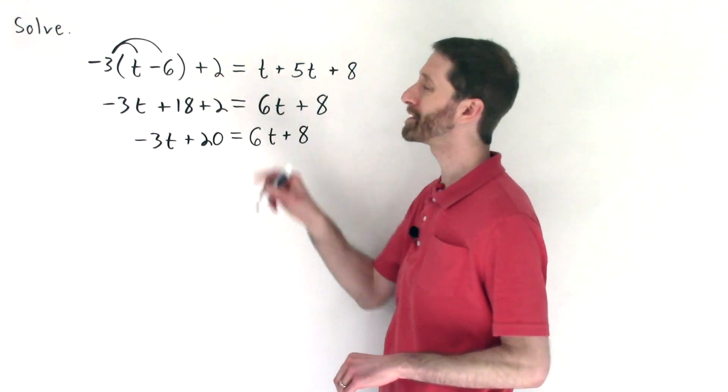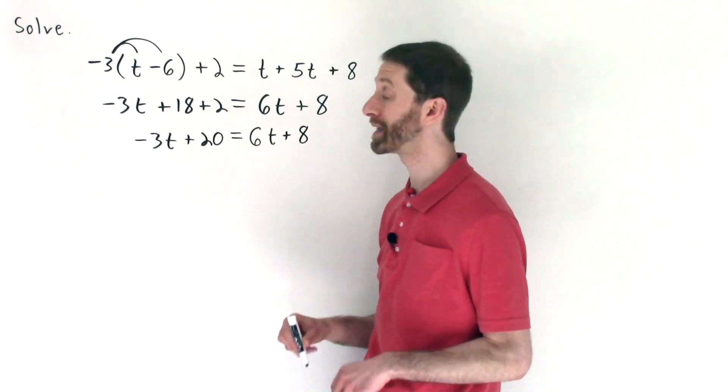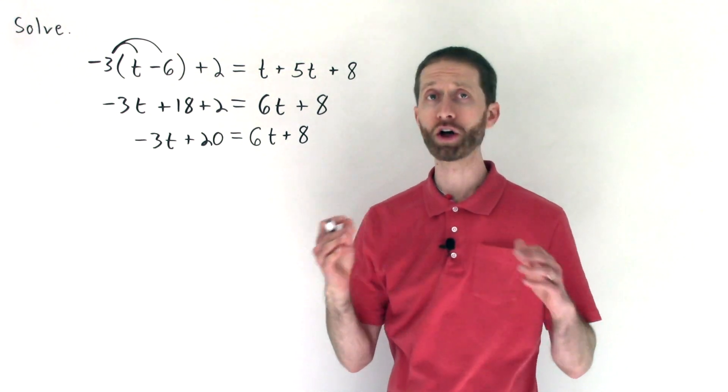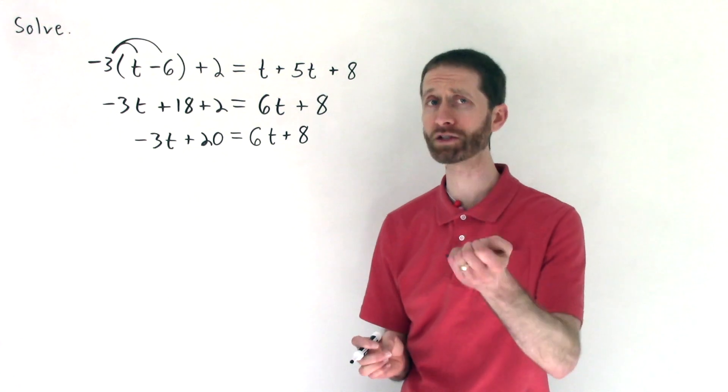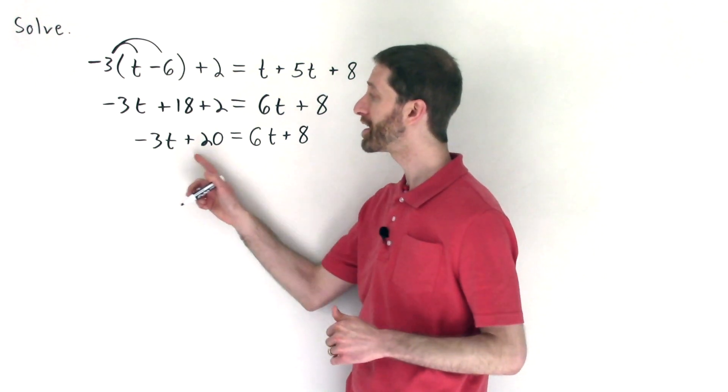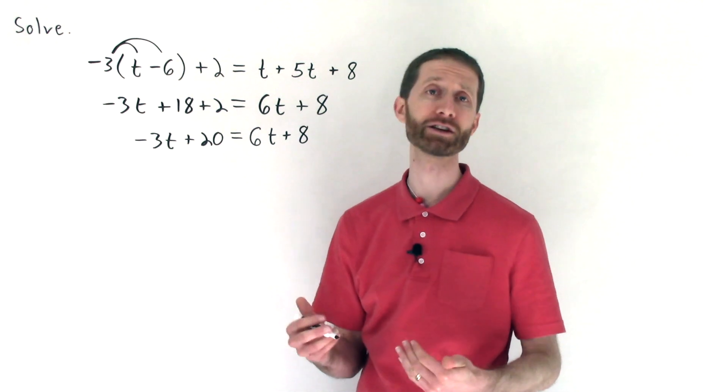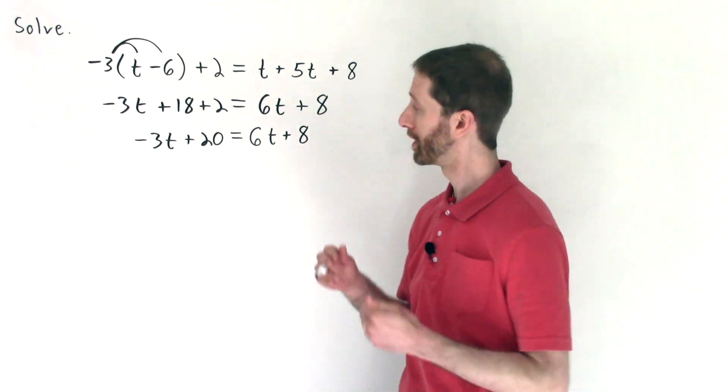So negative 3t plus 20 is equal to 6t plus 8. So what started out as a nasty mess of an equation ends up just being a little bit of simplifying all steps that you should know how to do or be comfortable with. And if not, watch some of the older videos to get comfortable with them. And then you end up with an equation that is much neater, much more under control. Let's solve it.